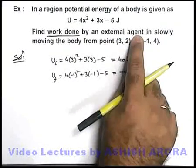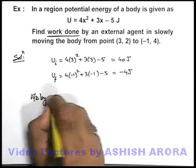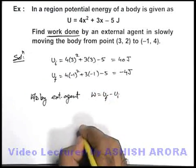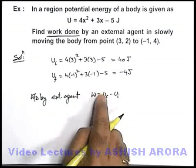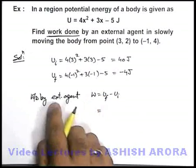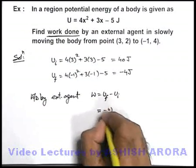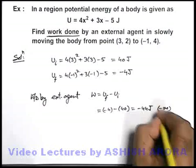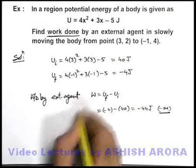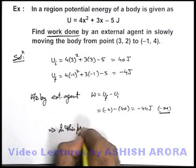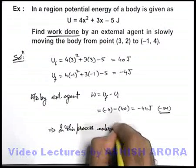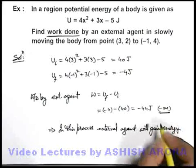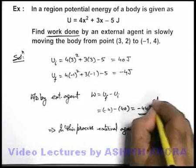We are required to find the work done by the external agent. We have already studied that work done by an external agent in a conservative field can be written as U_final − U_initial, because the external agent supplies energy so the final energy should be more. So we calculate U_f − U_i to get the work done by the external agent. Here we get: (−4) − (40) = −44 joules. You can see this is negative — negative work is done by the external agent. This implies that in this process the external agent will gain energy, because we have already studied that whenever work done is negative it implies gain of energy. So our answer to this question is −44 joules.